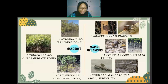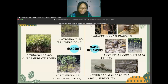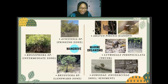Some examples of true mangrove species include Avicennia, found in the fringing zone; Rhizophora, found in the intermediate zone; and Bruguiera, commonly found in the landward zone.